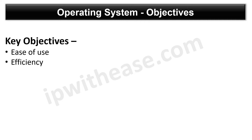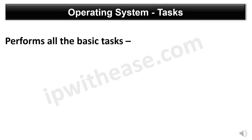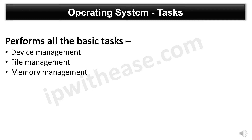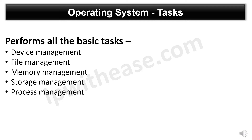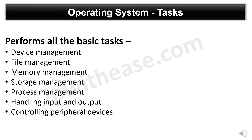Second is efficiency. When the OS uses all the resources efficiently and provides maximum output from minimal input, it will be considered efficient. An operating system performs all the basic tasks like device management, file management, memory management, storage management, process management, handling input and output, and controlling peripheral devices such as disk drives and printers.